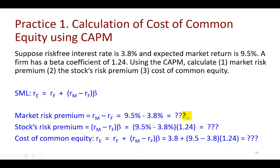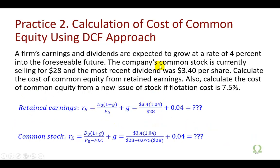That's all there is to it, and there are a couple of practice problems for you. The first uses the CAPM where the risk-free rate is 3.8%, expected market return is 9.5%, and beta is 1.24. I've set it up with the market risk premium, the stock's risk premium, and the cost of common equity using the security market line — go ahead and work through it. Finally, you'll also calculate the cost of common equity using the DCF approach, both when equity is generated internally as retained earnings and externally through the sale of new common stock, adjusting price for flotation costs. Hope that puts a smile on your face. Alright, bye-bye.